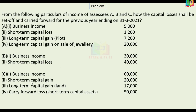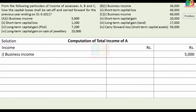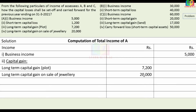Now we will talk about how to treat each case. For Assessee A, business income is 5,000. We are able to adjust the long-term capital gain with the short-term capital loss. The long-term capital gain from plot sale is 7,200, and from jewellery sale is 20,000, giving a total capital gain of 27,200.